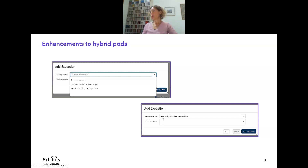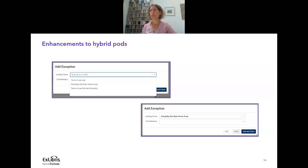Once you've added the exception, I'm showing here the lower part of the window where you can add the particular member. When you open this, you'll see only the institutions that are relevant to add to this exception. There is more documentation on the Knowledge Center. This was the hardest part of our session today — the rest is going to be much easier.